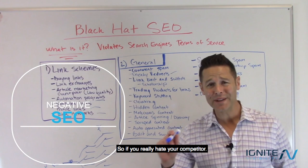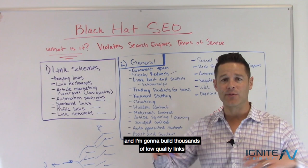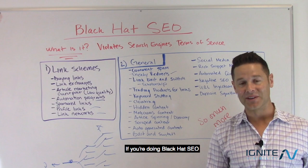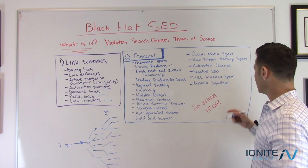No negative SEO either. If you really hate your competitor and you build thousands of low-quality links to their site to get them a penalty — to make it look like they were doing Black Hat SEO — you cannot do that. That's considered Black Hat SEO and negative SEO against your competitor.